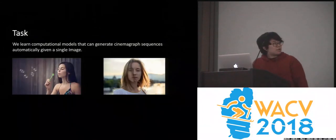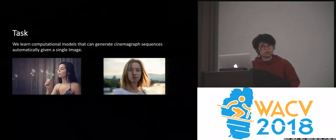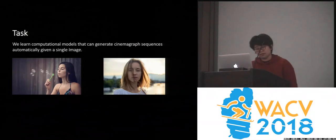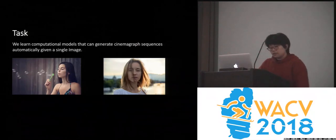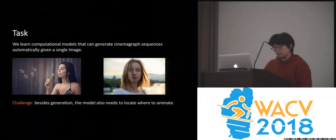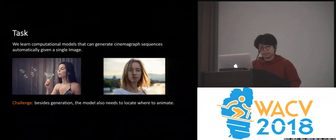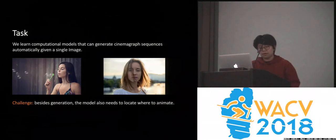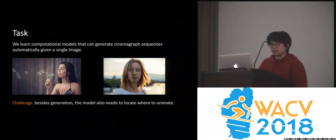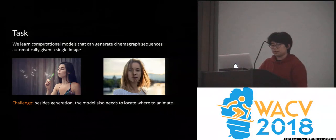Cinemagraphs are still photographs with one or more objects repetitively moving. The challenge of our task is that, besides generation, our model also needs to figure out where to localize, or where to animate.